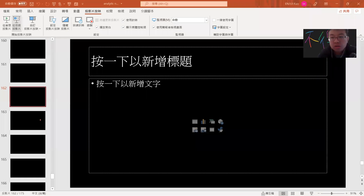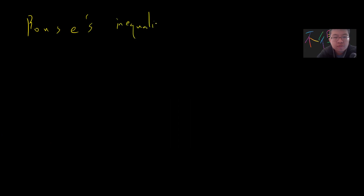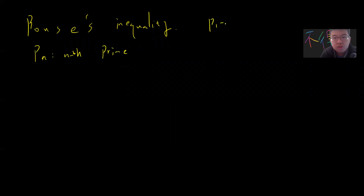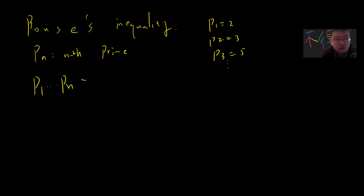In this video, let me prove the interesting inequality called Bonse's inequality. Bonse's inequality: define p_n to be the nth prime, so p_1 is 2, p_2 is 3, p_3 is 5. Bonse's inequality states that p_1 times p_2 up to p_n is greater than p_{n+1} squared, for n greater than or equal to 4.